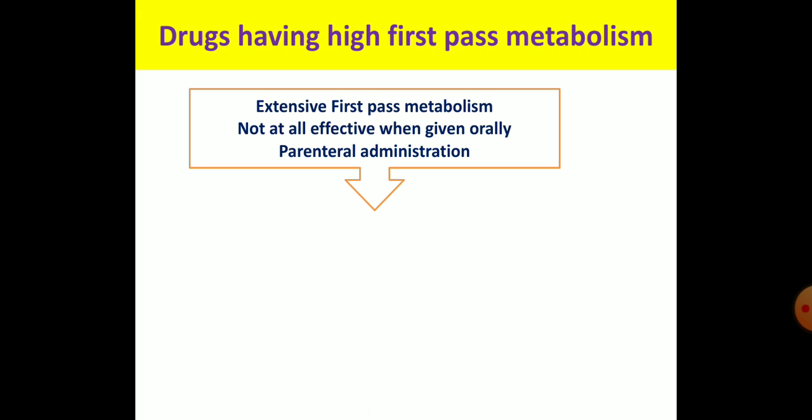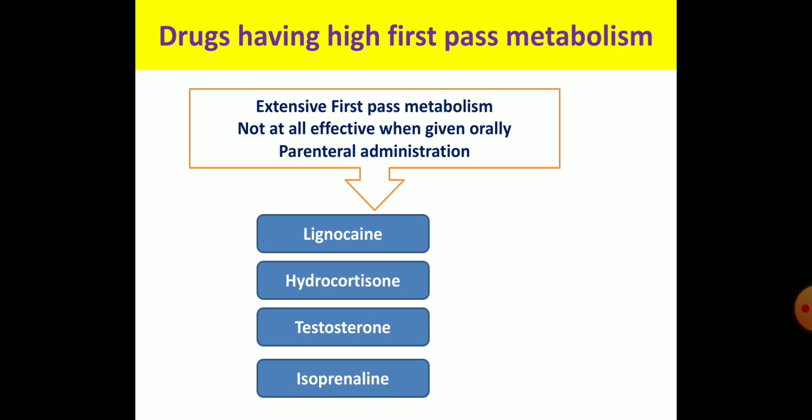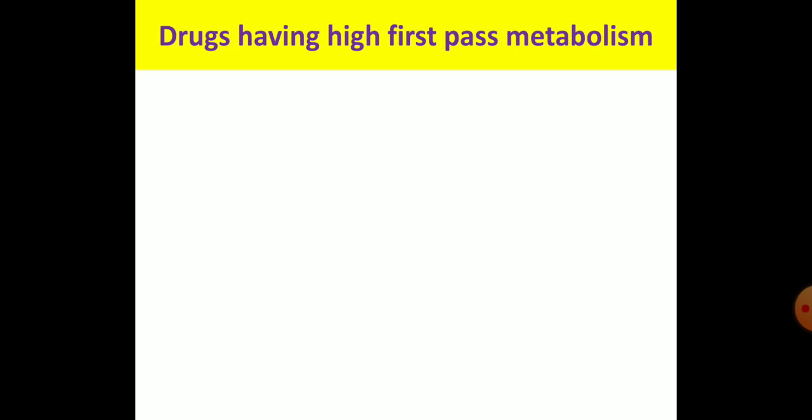Examples of drugs with extensive first-pass metabolism that must be given by the parenteral route include lignocaine (lidocaine), the most commonly used local anesthetic, which is extensively metabolized and must be given parenterally. Similarly, hydrocortisone, testosterone, and isoprenaline all have to be given by the parenteral route due to high first-pass metabolism.